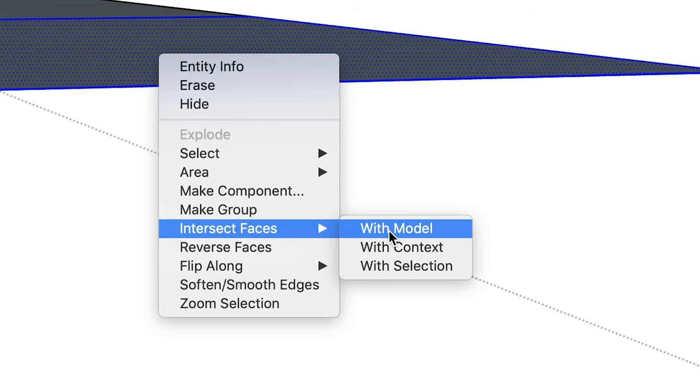Now there's a lot more to learn about using the intersect faces command to do things like combine shapes or cut one shape into another, as well as about the three types of intersect faces you can perform: with model, with context, or with selection. Those are topics for another time though, because right now I want you to consider an often overlooked feature of intersect faces that will help you solve lots of useful problems. With intersect faces, you can easily add otherwise hard to create edge loops wherever you need them.